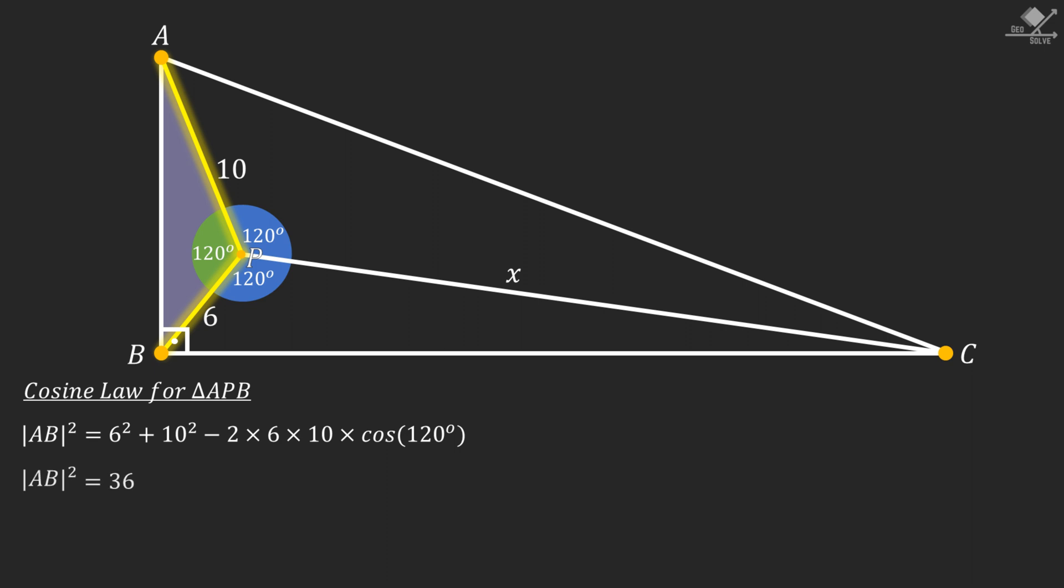From here, 6 squared will be 36, 10 squared will be 100, 2 times 6 times 10 is 120, and cosine 120 is minus 1 over 2. These minus signs will be a plus. 120 times 1 over 2 is 60, and that will be equal to 196. So the length of the line segment AB is 14 units. Let's also show that on the figure.